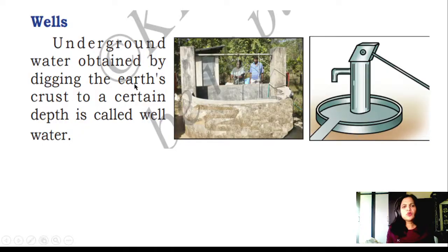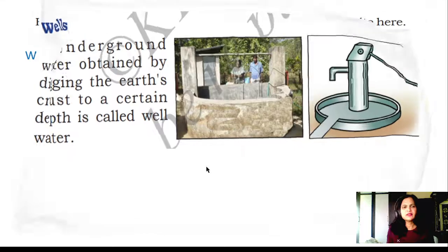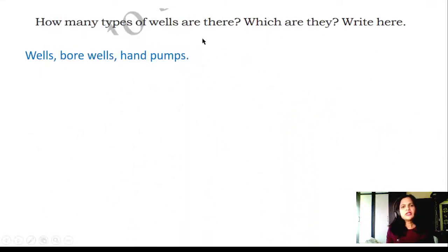Wells: Underground water obtained by digging the earth's crust to a certain depth is called well water. How many types of wells are there? Which are they? Write here: Wells, bore wells, hand pumps.